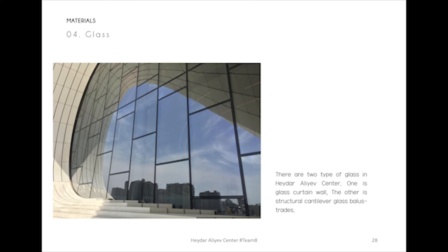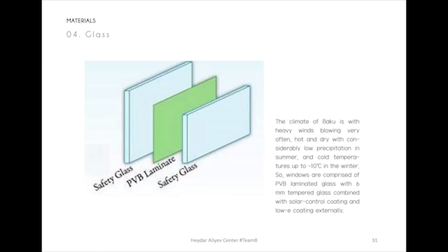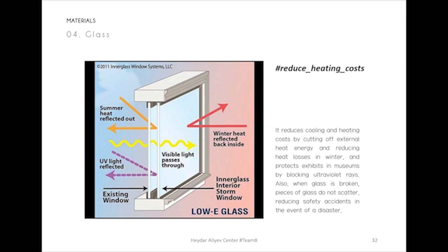There are two types of glass in the Haidar Alive Center: a glass curtain wall and structural cantilever glass balustrades. The glass curtain wall is unitized, structurally bonded fixed glazing with split mullions and transoms, adapter frames, and vertical cover profiles, with suspension points at the tops of the units. The climate of Baku features heavy winds, hot and dry summers with considerably low precipitation, and cold temperatures of up to negative 10 degrees Celsius in winter. So windows are comprised of PVB-laminated glass with 6 mm toughened glass combined with solar control coating and low-E coating externally. This reduces cooling and heating costs by cutting off external heat energy and reducing heat losses in winter, and protects exhibits and museums by blocking ultraviolet rays. Also, when glass is broken, pieces do not scatter, reducing safety accidents in the event of a disaster.